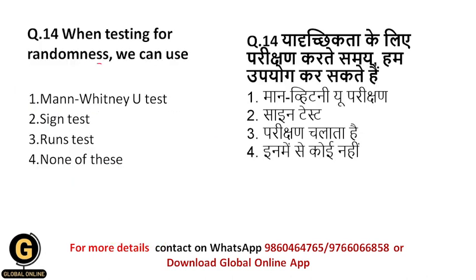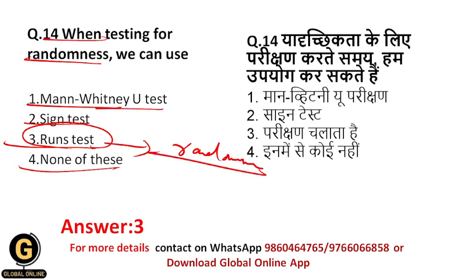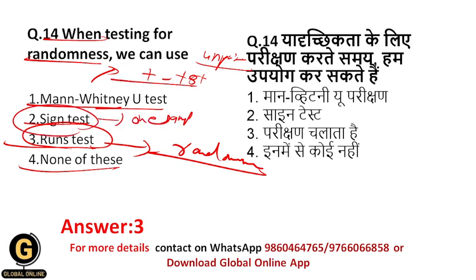When testing for randomness, we can use which test? The options are Mann-Whitney U test, sign test, runs test, or none of these. Obviously, in such situations you use the runs test, because the runs test is specifically for randomness. The Mann-Whitney U test is an alternative to the unpaired T-test, and the sign test is an alternative to the one-sample T-test. Their objectives are different. The correct answer is 3: runs test.